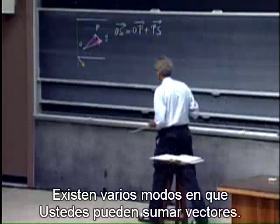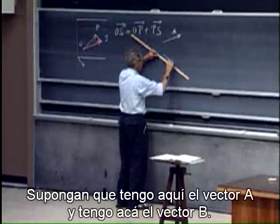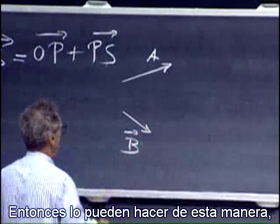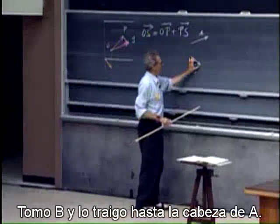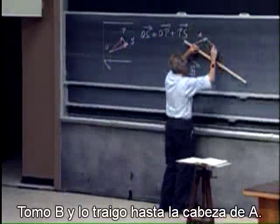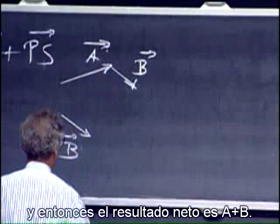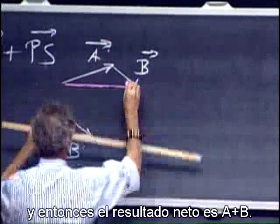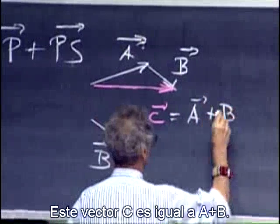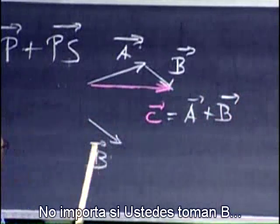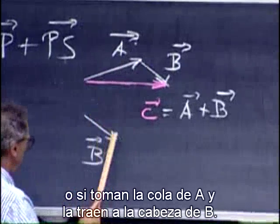There are various ways that you can add vectors. Suppose I have here a vector A and I have here a vector B. You can do it this way, which I call the head-tail technique. I take B and I bring it to the head of A. And then the net result, this vector C, equals A plus B. It doesn't matter whether you take the tail of B to the head of A, or the tail of A to the head of B — you will get the same result.